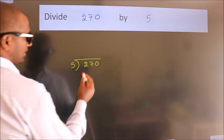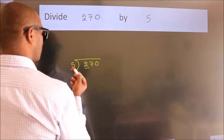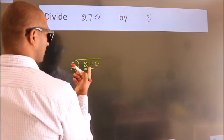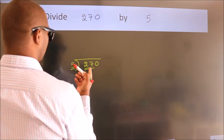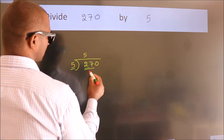Next. Here we have 2. Here 5. 2 smaller than 5. So we should take 2 numbers: 27. A number close to 27 in the 5 table is 5 fives 25.